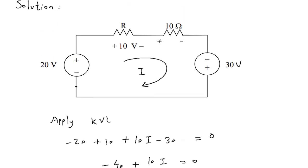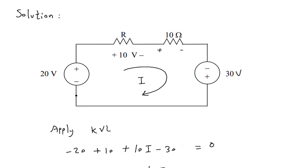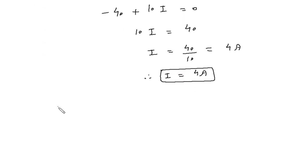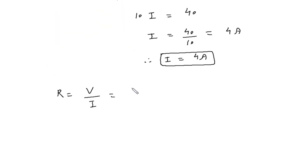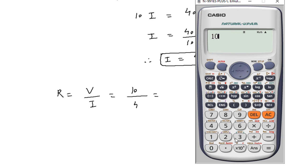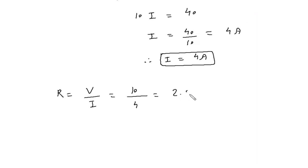Now from this we can find the value of this R. So R is equal to V by I. The value of voltage is 10. The value of current is 4. So 10 by 4 is 2.5, 2.5 ohm. Therefore, R is equal to 2.5 ohm.